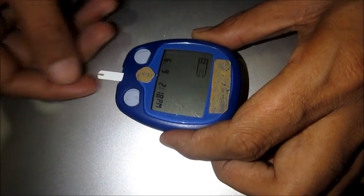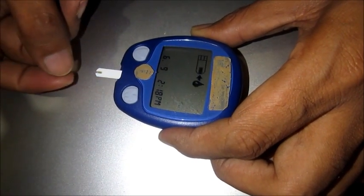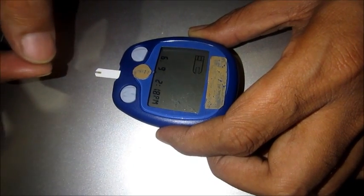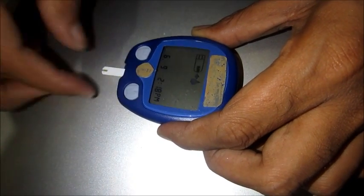This current is measured, which is directly proportional to the glucose level, and then you get the values displayed on the screen.